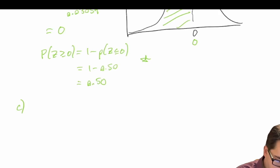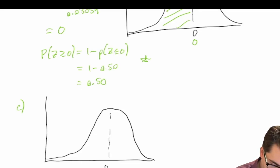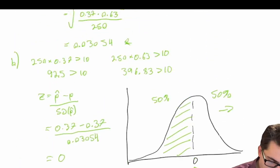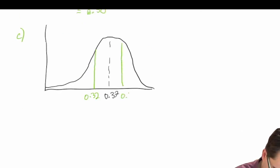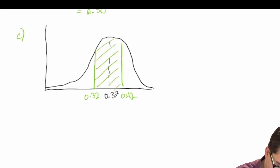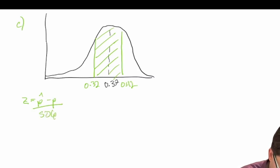Let's draw this out — we're assuming a normal distribution centered around a proportion of 0.37. We're asked about the range from 0.32 to 0.42, and we want the probability in that shaded region. We calculate: z equals the observed proportion minus the population proportion, divided by the standard deviation of p-hat. So for 0.32: z equals 0.32 minus 0.37 divided by 0.0305.